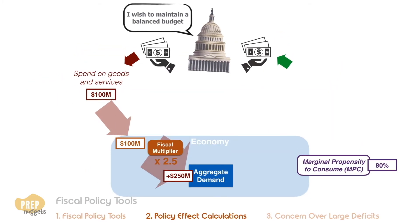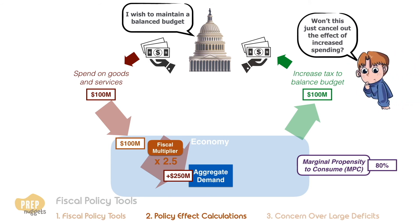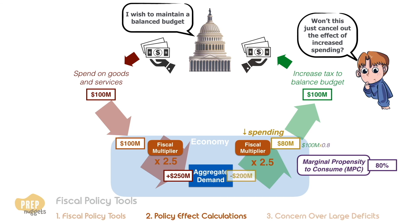Now let's say that the government wishes to maintain its current budget, so the $100 million increased spending has to be balanced by a corresponding $100 million increase in revenue from taxes. You may be wondering, wouldn't this fully cancel out the effect of the expansionary fiscal policy? Not so, if we again consider the marginal propensity to consume. When the disposable income of the economy falls by $100 million, the actual decrease in spending is just $80 million. If we multiply this by the fiscal multiplier, the decrease in aggregate demand is $200 million. So even though the fiscal budget remains unchanged, the net change in aggregate demand is positive $50 million.